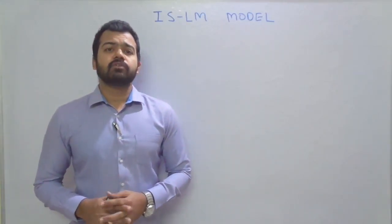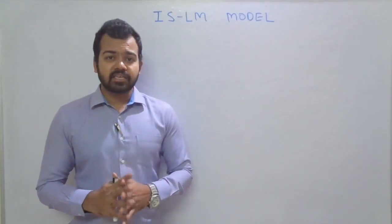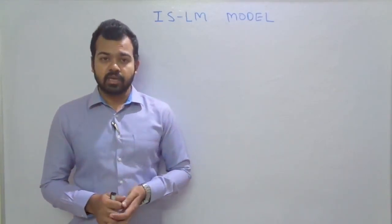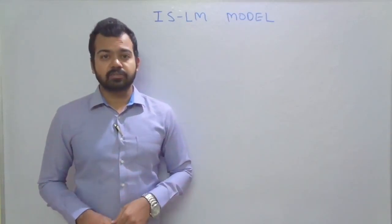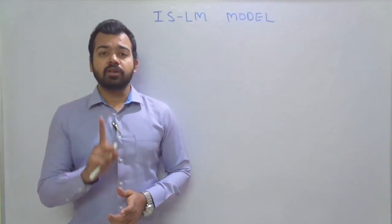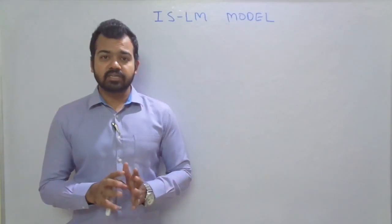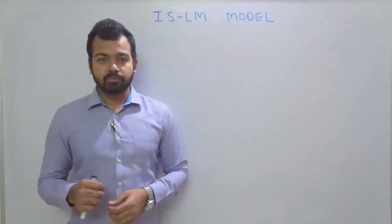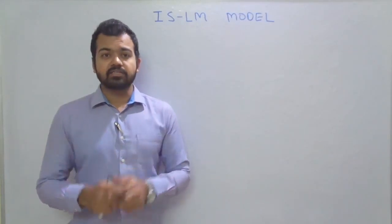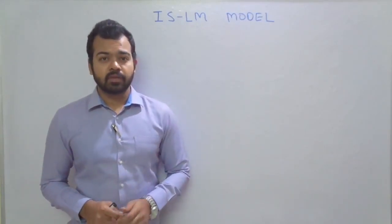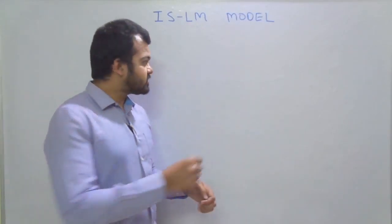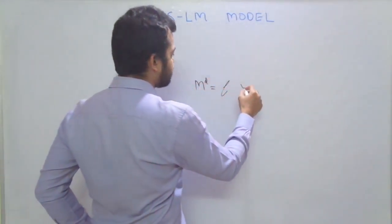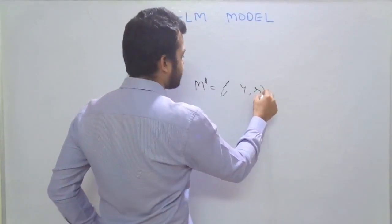As your income increases, your demand for money also increases — they are in direct proportion. It is very important to understand the relationship between the level of income and the demand for money, as this helps determine the rate of interest in the economy. We can write the function as: money demand is a function of income and rate of interest.